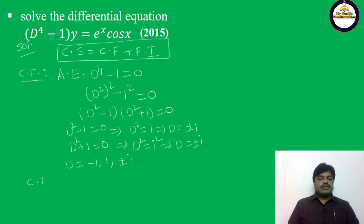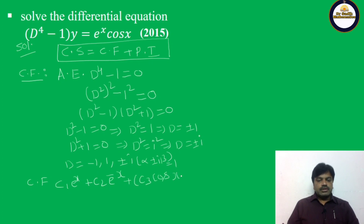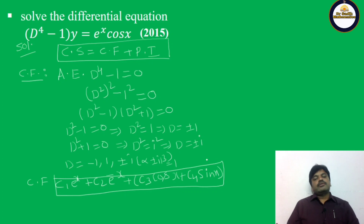The Complementary Function: for roots +1 and -1, we get c₁e^x + c₂e^(-x). For roots ±i, it is like α ± iβ with α = 0 and β = 1, so the contribution is e^(0·x)(c₃ cos x + c₄ sin x) = c₃ cos x + c₄ sin x. This is the required Complementary Function.